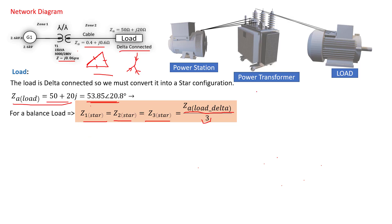We know that our Z actual for each branch of the delta is 50 + 20j ohm, which is an inductive load — this could be a motor as illustrated. On each side of that delta we have exactly the same motor connected, which results in the same impedance on each branch — that's why it is called balanced. In a situation where you have different motors, say a big one, a small one, and a very big one, they will have different impedances, so the load will be unbalanced.